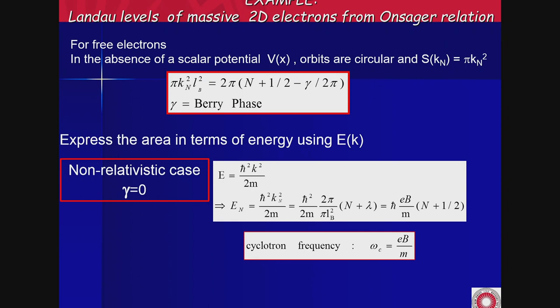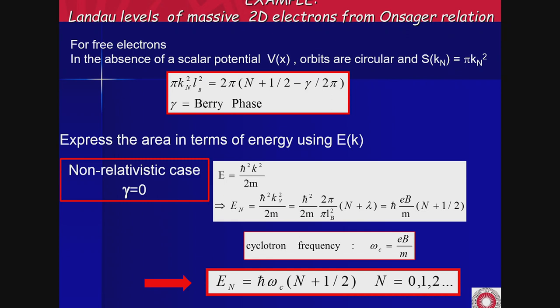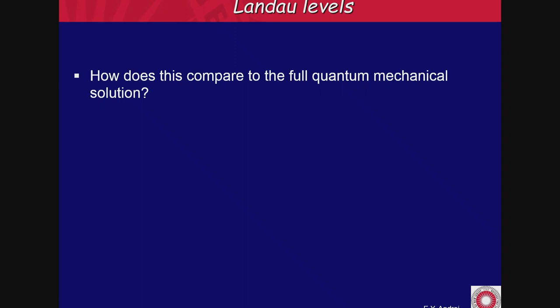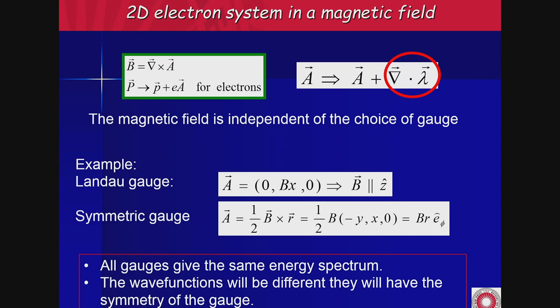Unless you have special things happening where the zero-point motion is cancelled by the Berry phase — we'll get to that. This was essentially no work at all: all you need to know is the dispersion. This is the Landau level energy sequence for non-relativistic electrons. How does it compare to the full quantum mechanical solution? If you use the Onsager relation you get the energy sequence, but not the wave function. To get the wave function, you must solve Schrödinger's equation or Dirac's equation, as applicable.